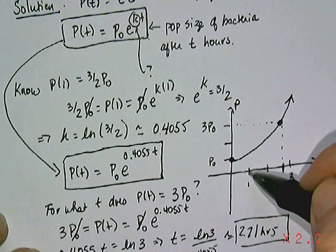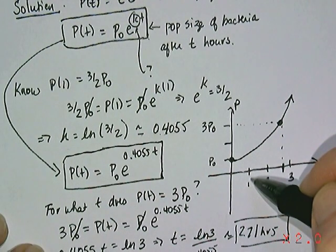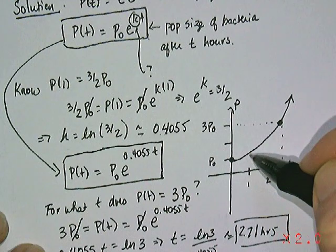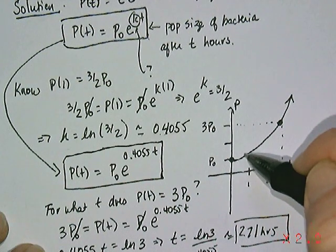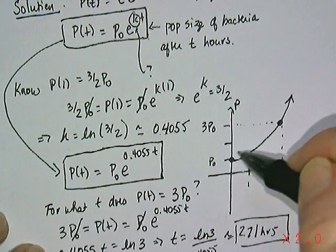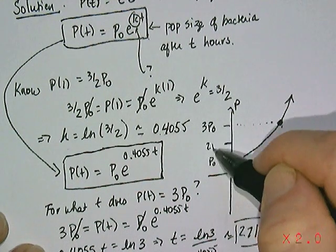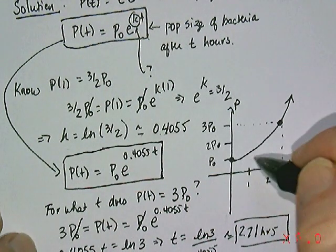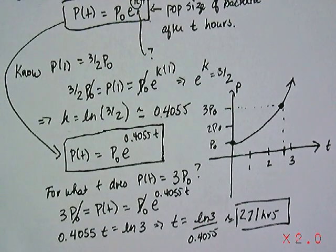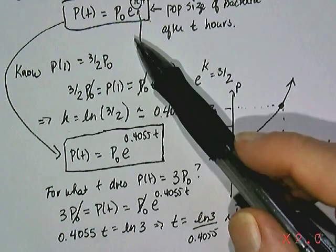Again, we do know that at time one, it should be closer to three halves. So it's going to be a little bit higher than P. It'll be between halfway between P zero and two P zero. It should be, if the curve was shaped maybe a little bit more appropriately. But that's sort of an illustration of a nice bacterial growth problem where you just use the basic model.